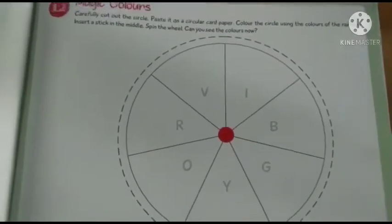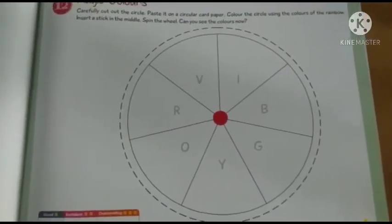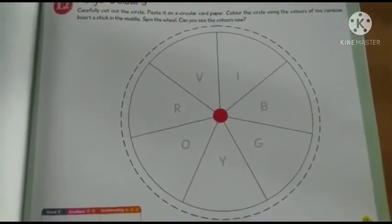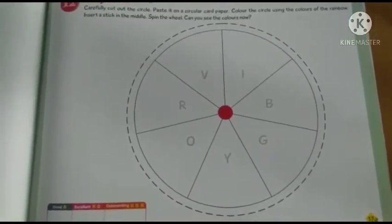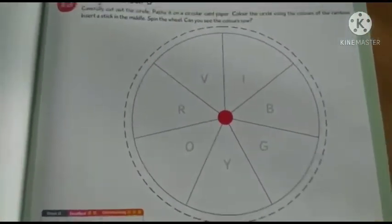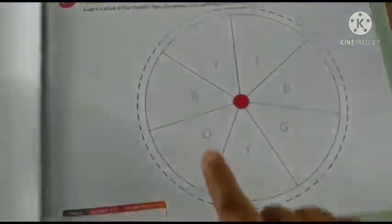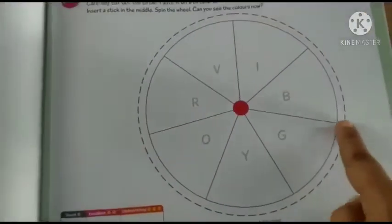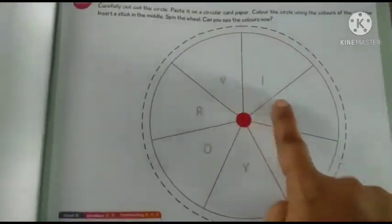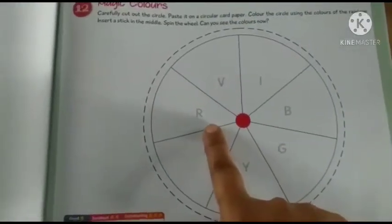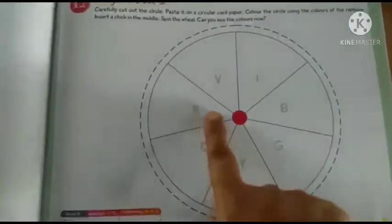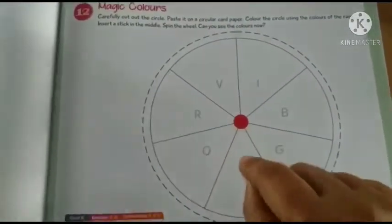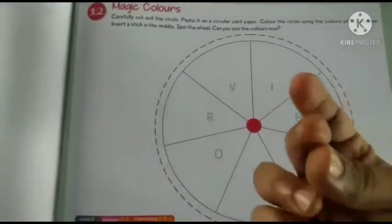Tho complete this homework and send me video. Aapko yhe complete karna hai. Woh kya karna hai? Phir se ek baar bata ti ho aapko. Yaha se dot me se yhe circle carefully cut karna hai. Phir yaha se aapko yhe rainbow ke colors se yhe colors karna hai. Phir beech me aapko yhe stick dalni hai. Stick dal ke yhe spin karna hai.